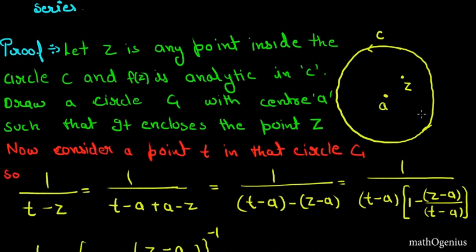Now let's prove the Taylor series. It's simple — we just take the definition, do some manipulation, and we will get the Taylor series for complex analysis. We will use the Cauchy integral formula to prove this, so if you haven't watched the Cauchy integral formula video, go and watch that first. Now let z be any point inside the circle C, with f(z) analytic in C — there is no singularity inside the circle.